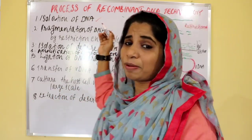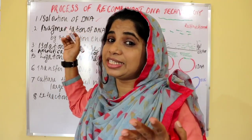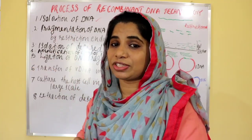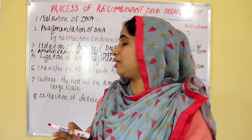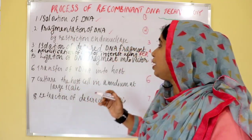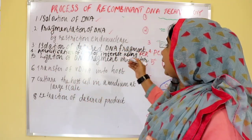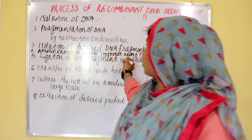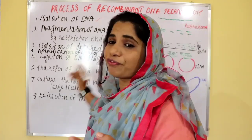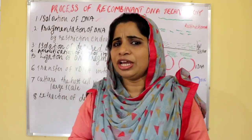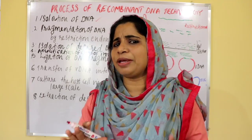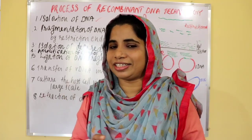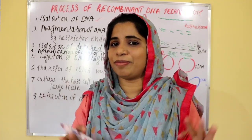Then we have vectors. Vectors are cut using restriction enzymes. Amplification of the gene of interest using PCR — polymerase chain reaction.